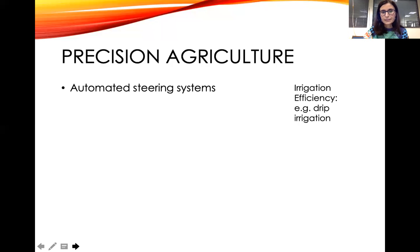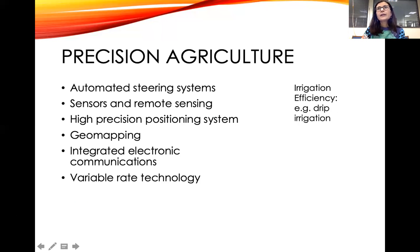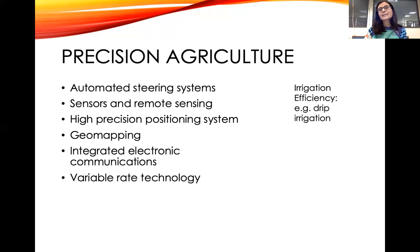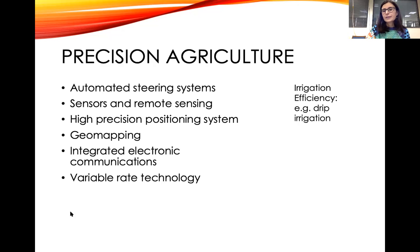Coming back to precision agriculture: drip irrigation is in a way precision agriculture too, because you're taking water exactly where it's needed, reducing evaporation and increasing water use efficiency on soil. But the particular field I'll be referring to today is more machine-oriented and gadget-oriented — whether it's automated steering systems, sensors, remote sensing, satellites collecting data, GPS, geomapping, integrating electronics, or variable rate technology.